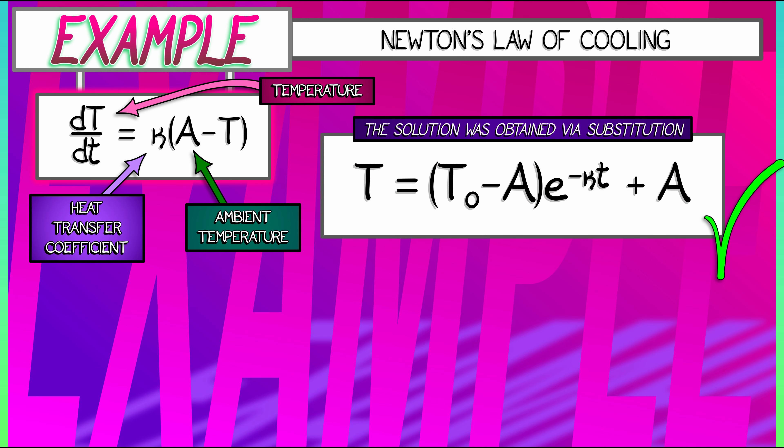minus κt plus A. If I think about what happens as time goes to infinity, keeping in mind that κ is a positive constant, that exponential dies off. Indeed, this matches our intuition: the temperature converges to the ambient temperature—the coffee cools off. Interpreting that in the light of